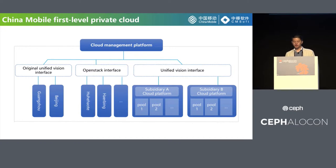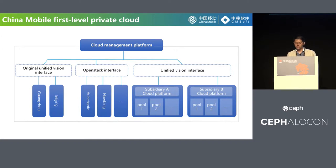Apart from the public cloud, China Mobile also invests a lot of resources in the private cloud. China Mobile's first-level private cloud uses a one-level platform, two-level management architecture. Through a private cloud management platform, multi-site resource pools are unified and managed. The platform realized unified view, access of the whole network resources, and access control of some provincial resource pools in 2017. In China Mobile's first-level private cloud, the total capacity of block storage has been over 20 PB, object storage has been over 70 PB, and there are over 2,600 OSDs in one object storage cluster.